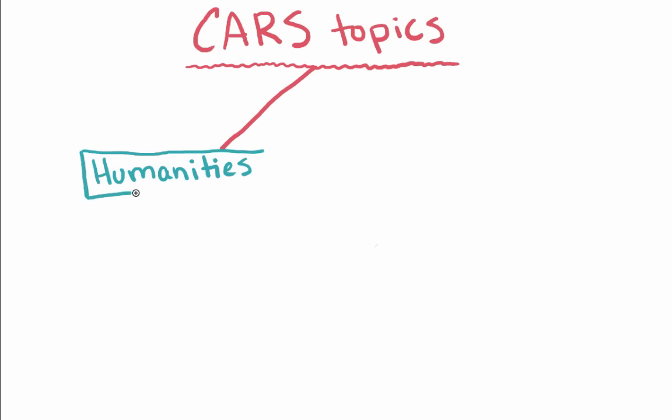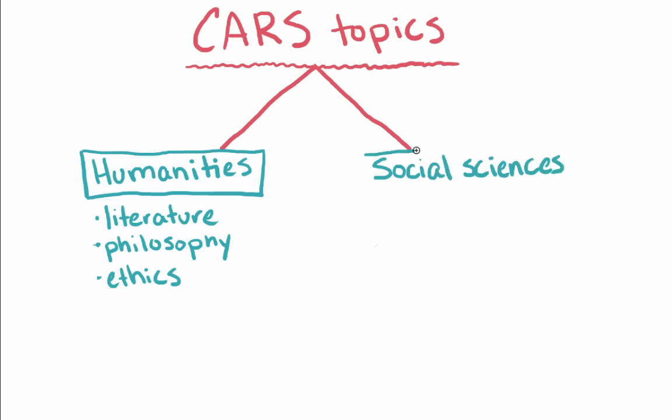In terms of the topics that you'll be reading about, approximately half of these passages will come from the humanities, such as literature, philosophy, or ethics. The other half will come from social sciences, such as psychology, sociology, or economics.